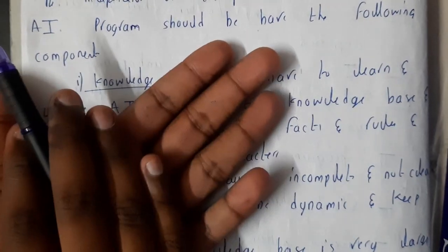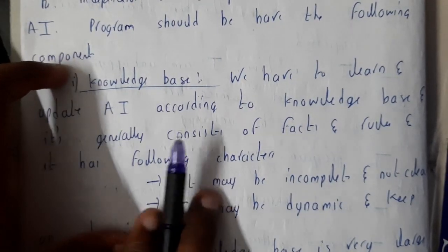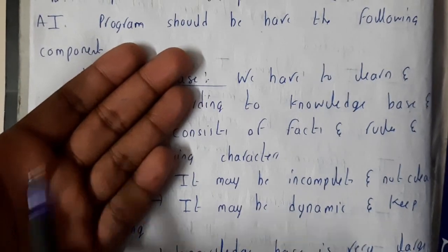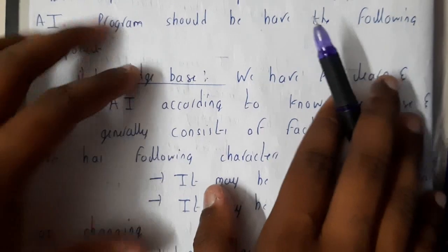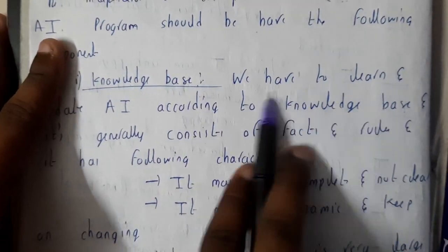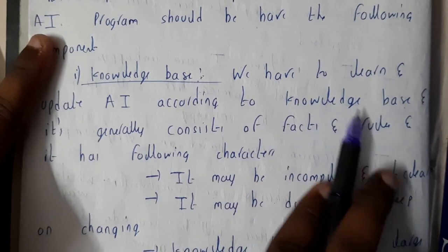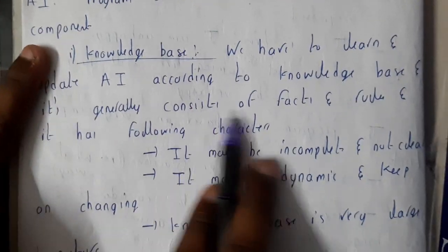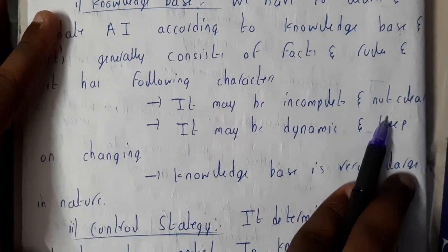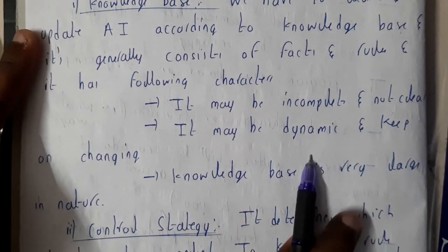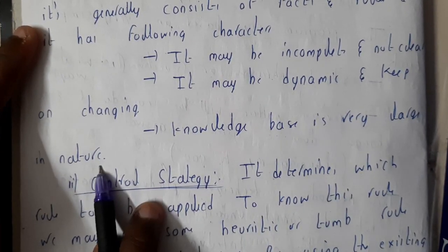Knowledge base — from the name itself we can say that somewhere we are storing our particular knowledge. It may be complete or incomplete; we access it, run algorithms or calculations, and get results. AI learns and updates according to the knowledge base. It generally consists of facts and rules, and it may be incomplete and very large in nature.